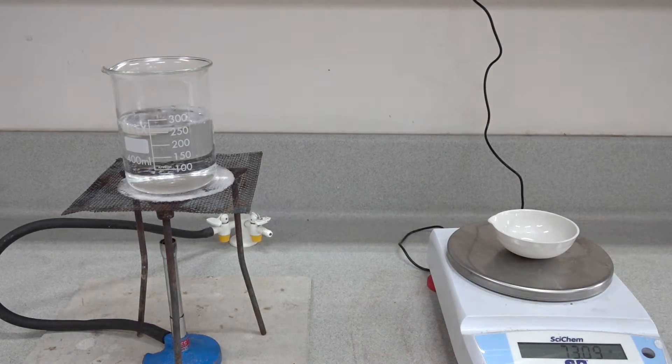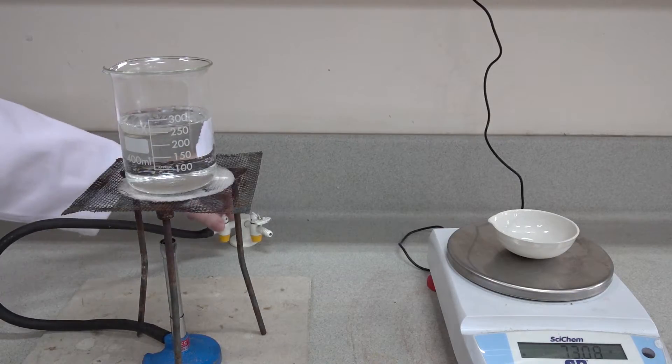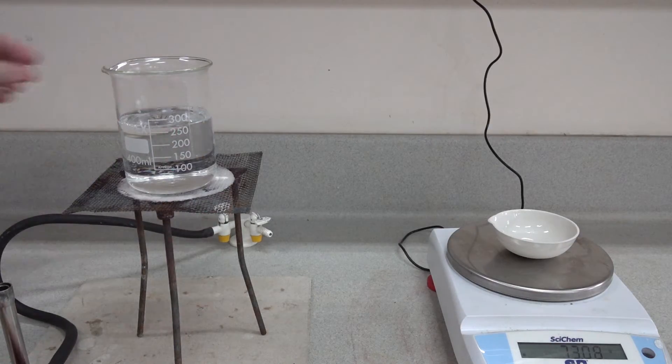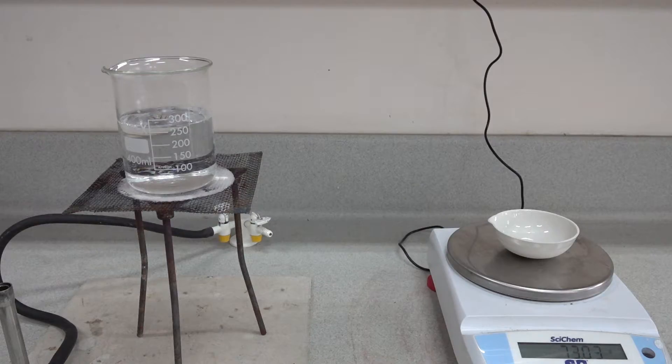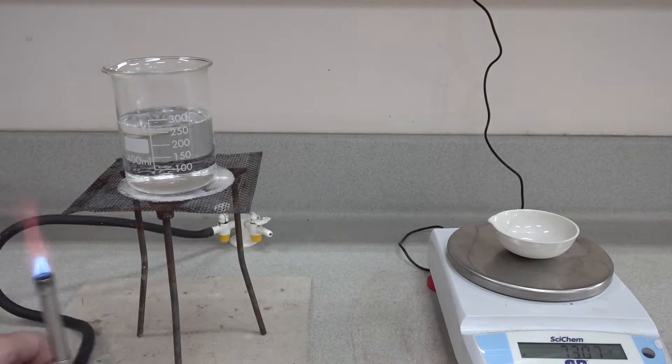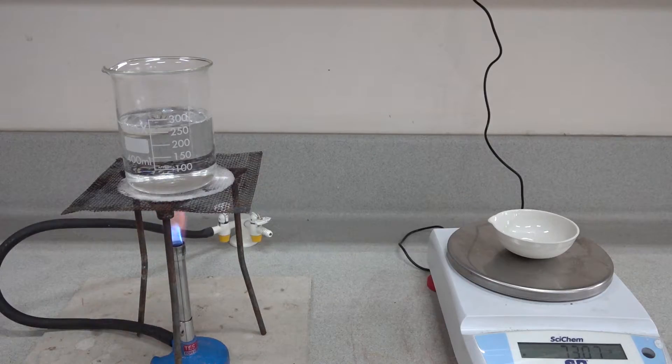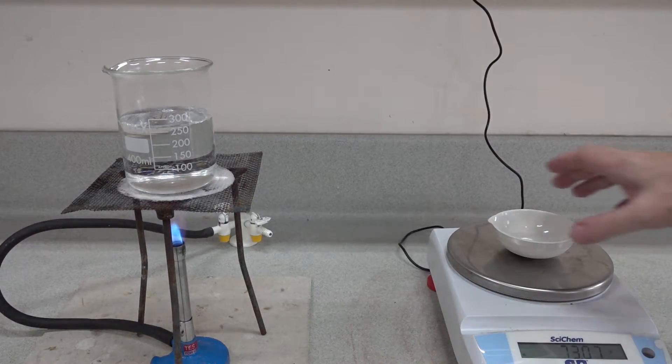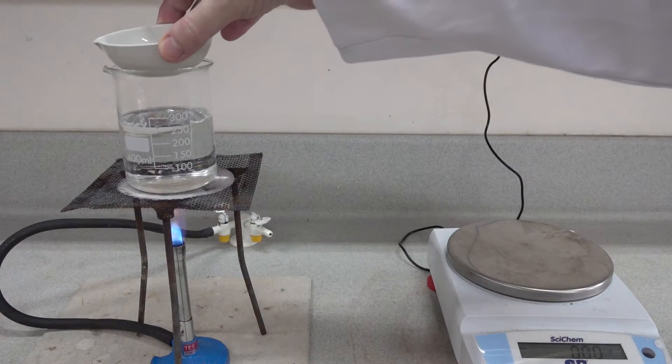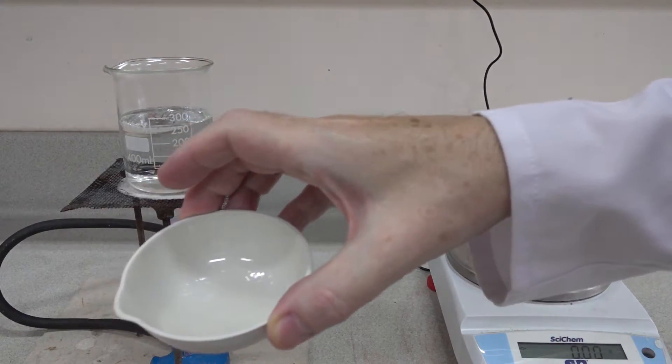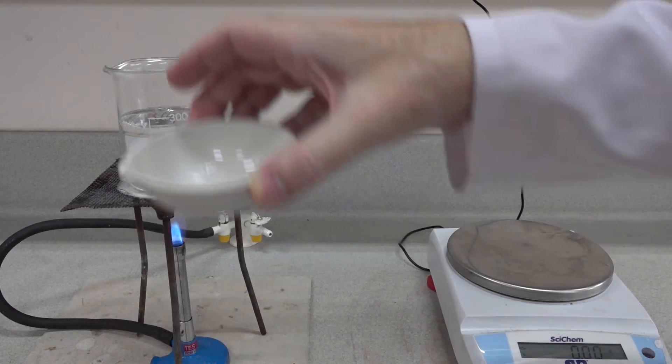We've already got some anti-bumping granules in the beaker, so let's turn the burner on and place our solution, which is already beginning to crystallize as it's cooled down, onto the beaker.